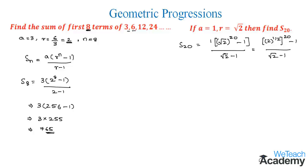When simplifying the powers, we get 2 power 1 times 2 and 2 power 10 times is 20. That implies we get 2 power 10 minus 1 divided by root 2 minus 1.